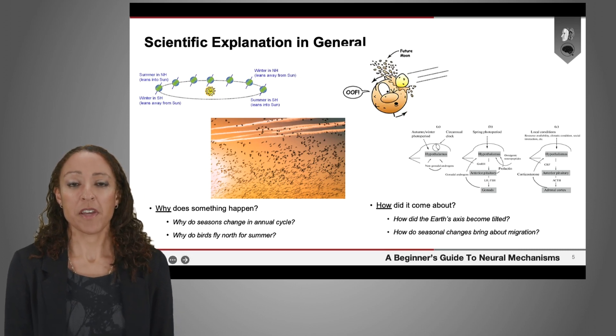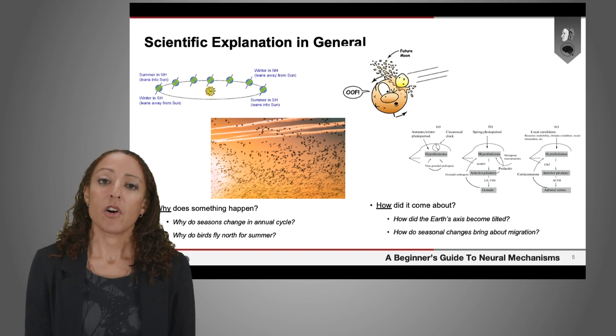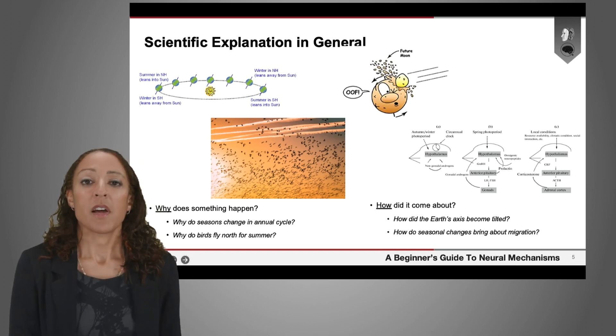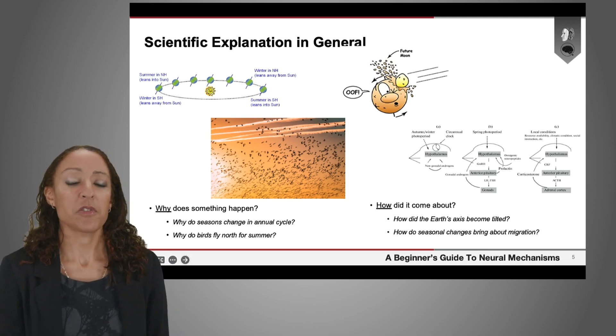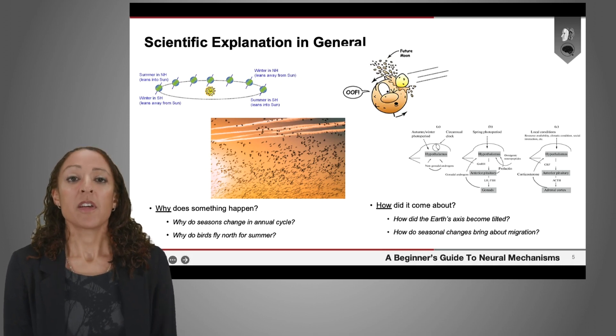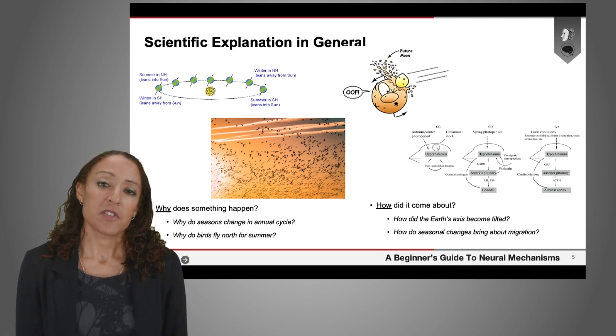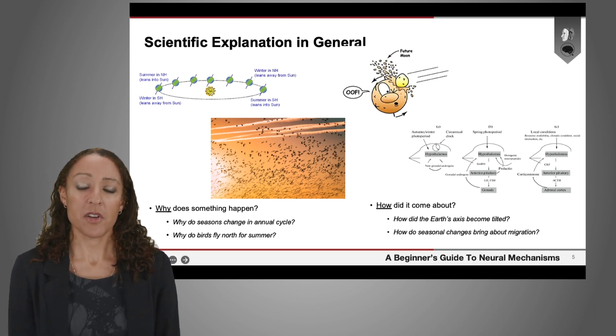There are all kinds of things that we ask for scientists to explain about the natural world. But broadly, we're interested in the question of why things happen and how things happen. So if you take the example of the seasons changing throughout the year, the question, why does this happen, is explained by scientists by referring to the tilt of the Earth's axis as it rotates around the Sun.